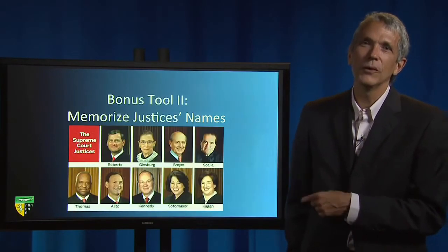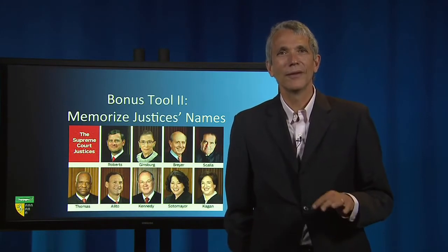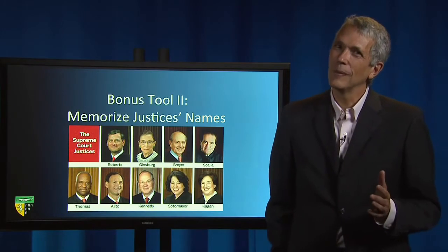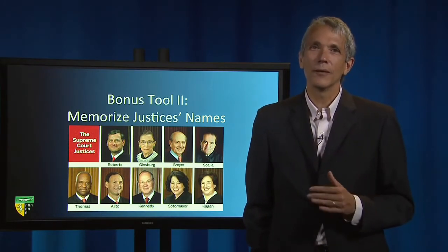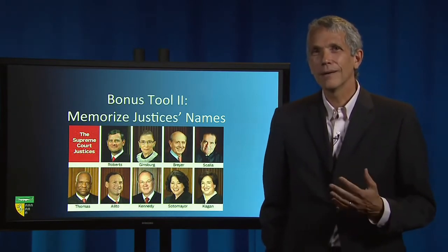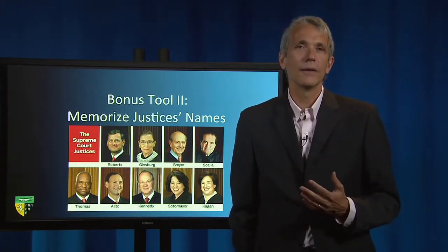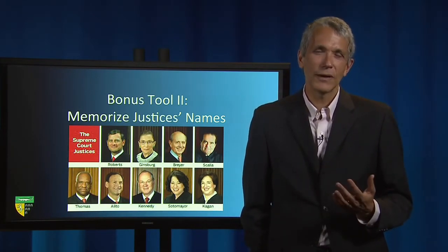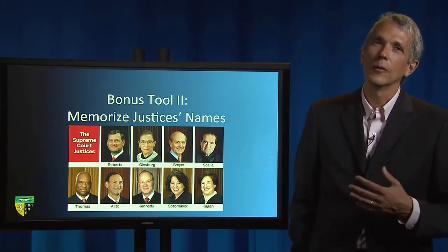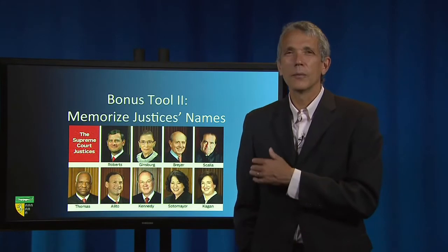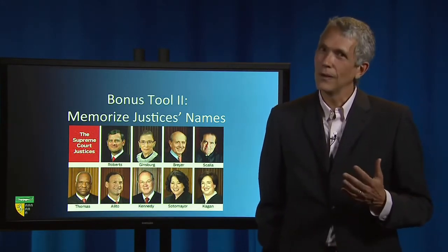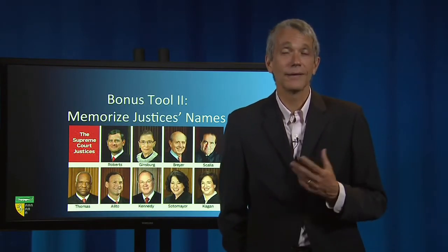Bonus rule number two: memorize the names of the current Supreme Court Justices. When I was a first-year student, there was an embarrassing moment in front of my classmates in the first month of classes where it was clear that I couldn't remember the name of one of the sitting Justices. You should be able to say with confidence that Scalia, Thomas, Alito, Roberts, and Kennedy are more conservative; that Breyer, Ginsburg, Sotomayor, and Kagan are more liberal; and you should probably know that Kennedy is the most important swing vote, at least on some issues.